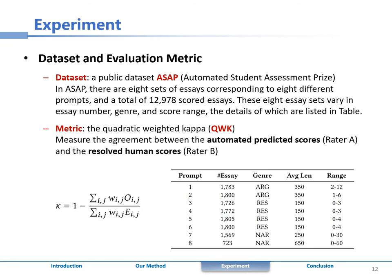We conducted experiments on the public dataset ASAP. It is a widely used benchmark dataset for the task of automated essay scoring. In ASAP, there are eight sets of essays corresponding to eight different prompts.